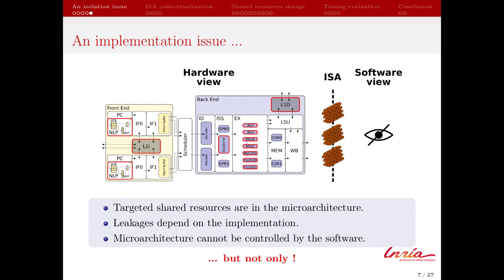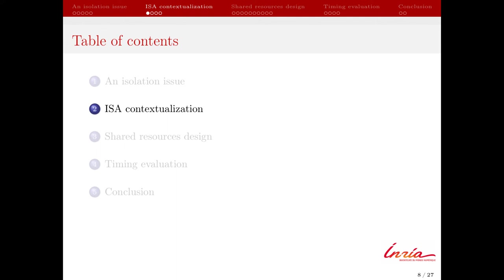A simple conclusion could be that we are facing an implementation issue, because the targeted resources are only in the microarchitecture and completely independent of the different executed programs. The leakage depends on the implementation and its internal mechanisms, which are not always the same for all processors. Most of the exploited phenomena are invisible to software, which has no control over what happens at the hardware level. But we will now see that this point of view is too reductive, which leads to the first part of our approach: the role of the ISA and how to modify it.